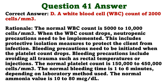Oxybutynin chloride is prescribed for a client with a neurogenic bladder. Which sign would indicate a possible toxic effect related to this medication? A. Pallor. B. Drowsiness. C. Bradycardia. D. Restlessness. The correct answer is D: restlessness. Toxicity of this medication produces central nervous system excitation, such as nervousness, restlessness, hallucinations, and irritability. Other signs of toxicity include hypertension, confusion, tachycardia, flushed or red face, and signs of respiratory depression. Drowsiness is a frequent side effect of the medication but does not indicate overdose.